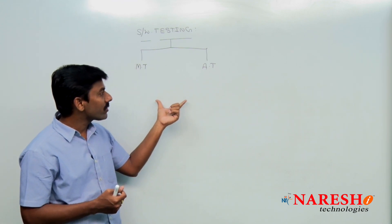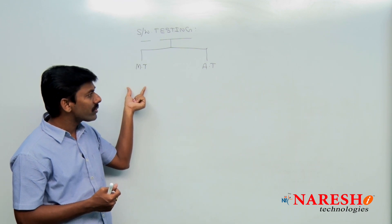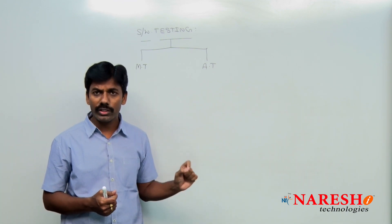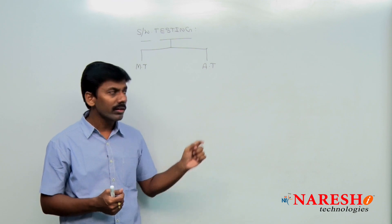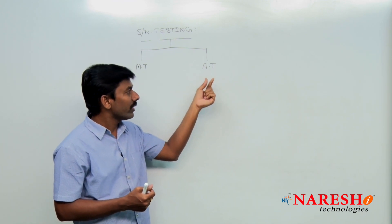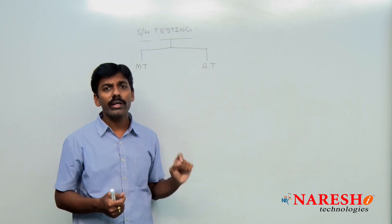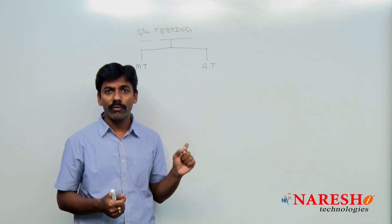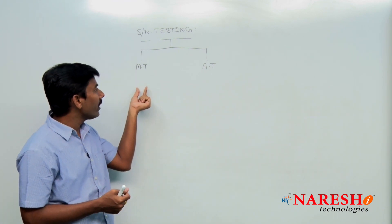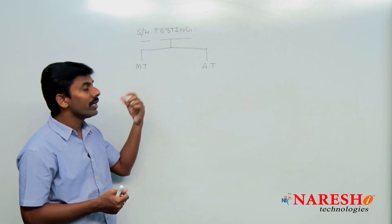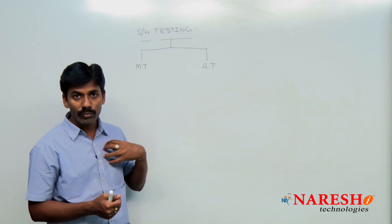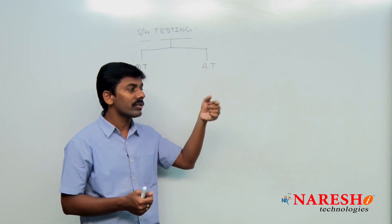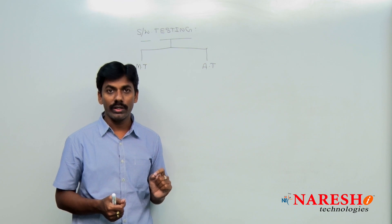Both are testing only. In manual testing, we are making sure that the application is working fine. In automation testing, we are also making sure the application is working fine. But in manual testing, we have to do it ourselves. In automation testing, the tool has to do it.